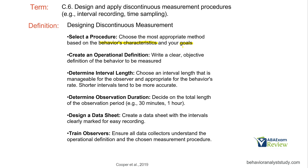Once we have a procedure, we determine the interval length. Depending on how long your observation is or how much time you have, that determines interval length. We also look at the behavior — does it happen for long continuous periods, or is it sporadic? Shorter intervals tend to be more accurate. We also need to consider observation duration: 30 minutes, an hour, 10 minutes — how much time do you need to get a good picture of that behavior?